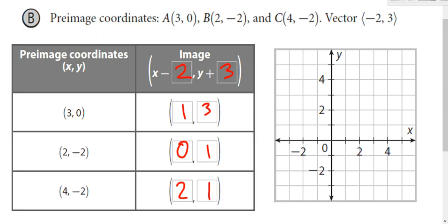You can plot both the preimage and the image. There's 3, 0. 2, negative 2. 4, negative 2. There's our preimage.